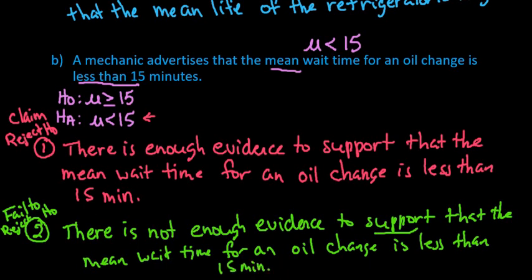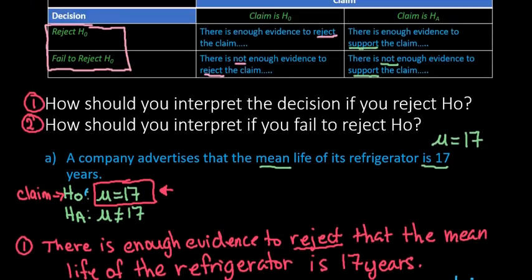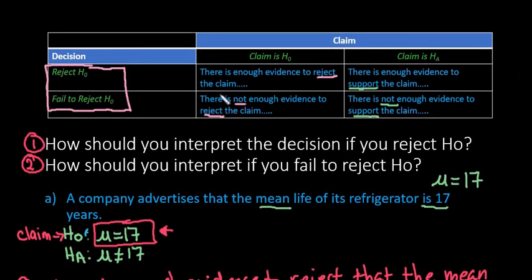Just to recap: the chart makes it very easy to break down how to interpret your decision. If you are rejecting the null hypothesis, you are either going to have enough evidence to reject or enough evidence to support, depending upon where your claim is. If you fail to reject, you will not have enough evidence to reject or not have enough evidence to support, depending upon where your claim is. As always, thanks for watching. If you have any questions or additional topics you'd like me to cover, please let me know.